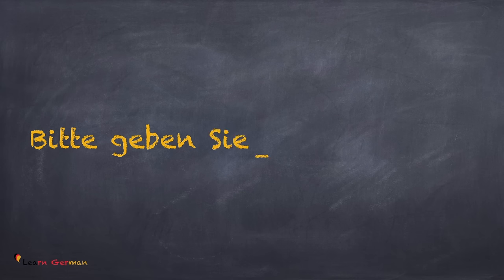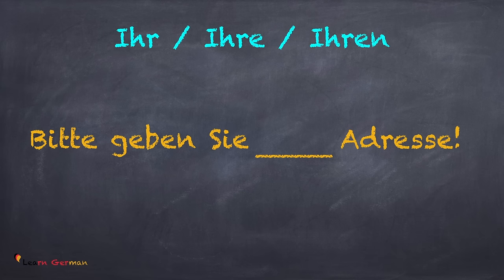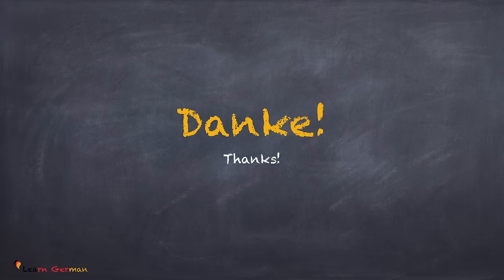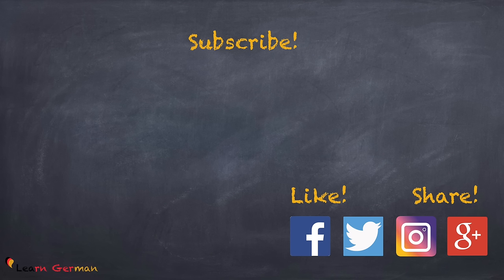And here comes the last sentence. The options are ihr, eure, or euren. The correct answer is: Bitte geben Sie Ihre Adresse. Sehr gut! Hope you enjoyed today's lesson. Danke. Thanks for watching this video. If you like this video, do give me a thumbs up and share it with your friends. Don't forget to subscribe to my channel for more videos. Tschüss! Auf Wiedersehen!